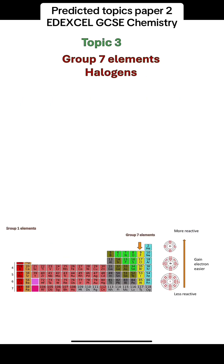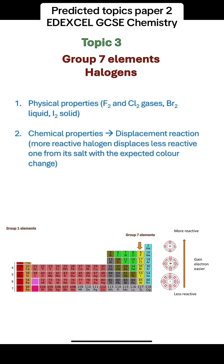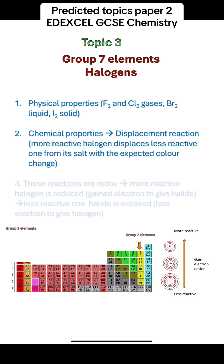Topic 3 is group 7 elements, or halogens. Their physical properties: fluorine and chlorine are gases, bromine is a liquid, and iodine is a solid. Their chemical properties include the displacement reaction, where the more reactive halogen will displace the less reactive one from its salt. You should know the expected colour change when you carry out this reaction.